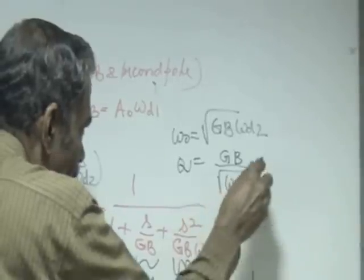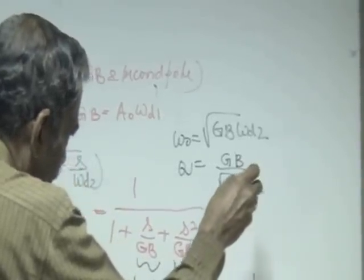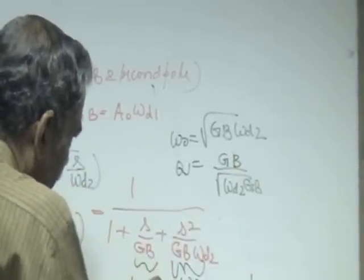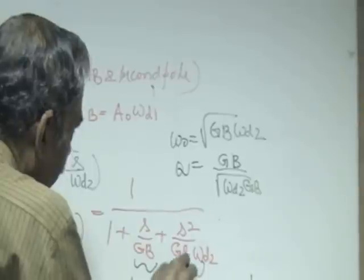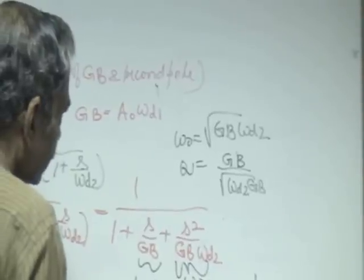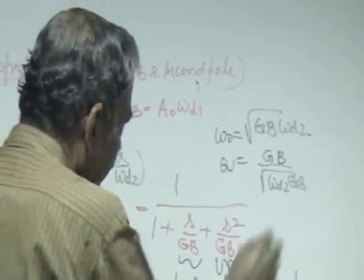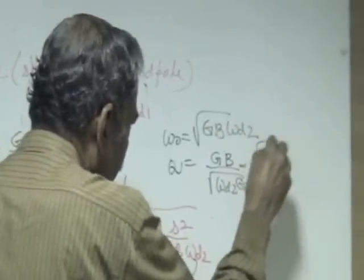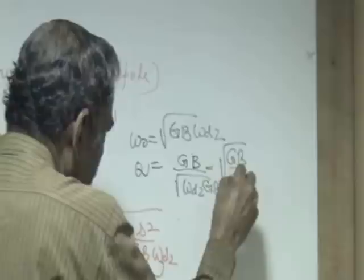GB is equal to omega naught into q. Omega naught is equal to square root of GB into omega d2. This will be equal to GB divided by square root of omega d2 into GB.